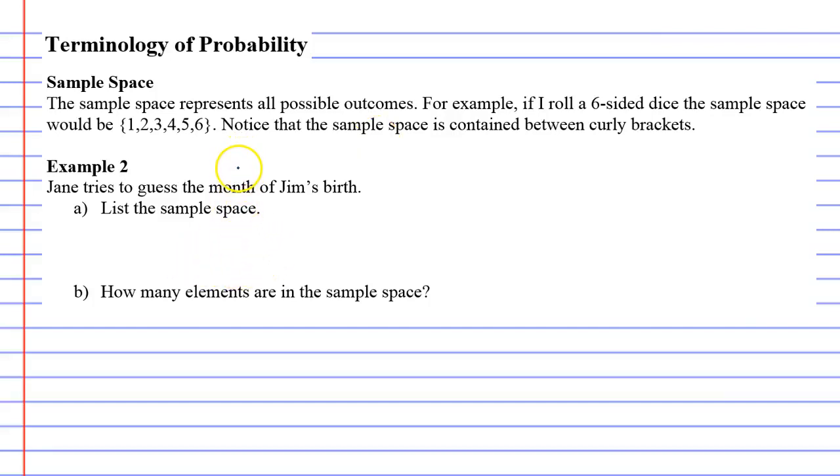In terminology of probability, we're going to talk about the sample space. The sample space represents all the possible outcomes. For example, if we roll a dice, all the possible outcomes we can get are the numbers 1, 2, 3, 4, 5, or 6. This is the sample space.